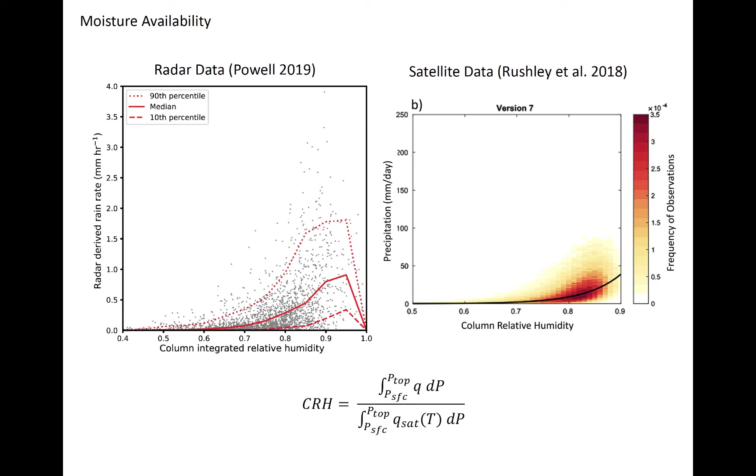The relationship between tropospheric moisture and precipitation is well documented. Two recent examples of the relationship in observations are shown here. The panel at left is based on ground-based radar and weather balloon data, and the panel on the right is based on satellite-derived retrievals of humidity and rain rate. On the x-axis are column-relative humidity, which is described by the equation at the bottom. The column-relative humidity is the integral of specific humidity through the atmosphere divided by the integral of saturation-specific humidity, which is a function of temperature. If the atmosphere were completely saturated, column-relative humidity would be 1.